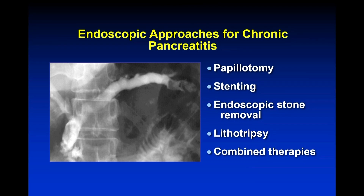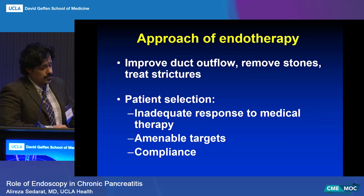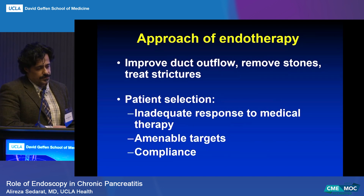Our approach involves a number of tools. Usually there's some kind of papillotomy. The pancreas sphincterotomy is less precise and defined compared to a biliary sphincterotomy, so we have to be careful not to cause perforation by cutting too much, but also avoid delayed stenosis by not cutting enough. We have stents, stone removal, and stone destruction — often in combination. Here you can see a pancreatogram of a big dilated duct with a stone at the head and also a stone out at the tail. The approach is to improve ductal flow, remove stones, and treat strictures. Most folks are going to have inadequate response to medical therapy, since medical therapy is not exactly robust for chronic pancreatitis.